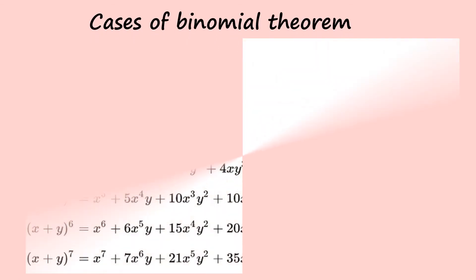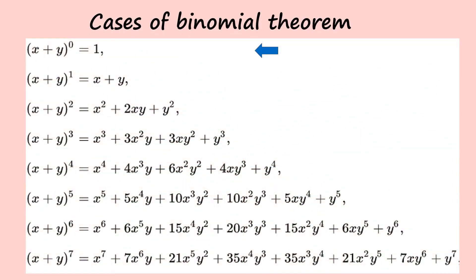Let's consider some cases. For exponent 0, we get 1 because anything to the power of zero is one. For exponent 1, the binomial coefficients are 1 and 1. For exponent 2, the binomial coefficients are 1, 2, and 1. You can repeat this for exponents 3, 4, 5, 6, 7 and so on to build Pascal's triangle.